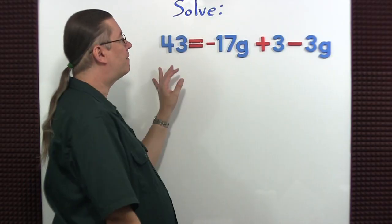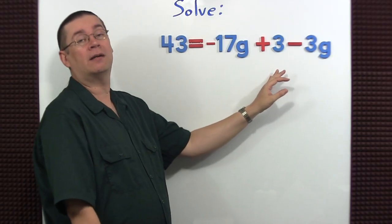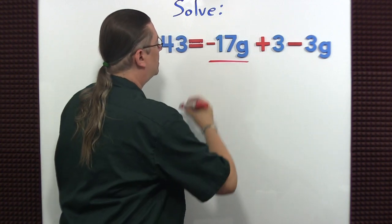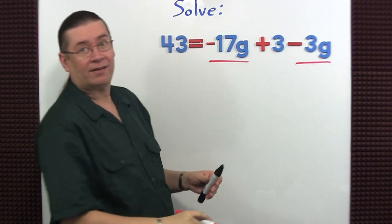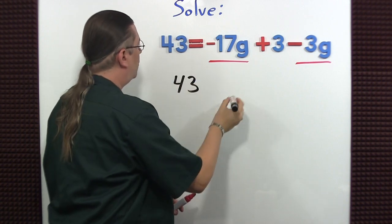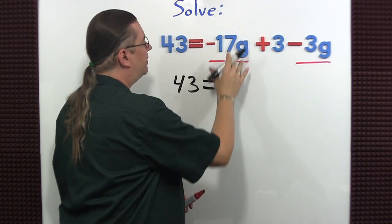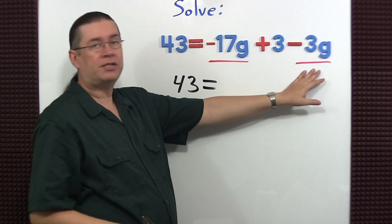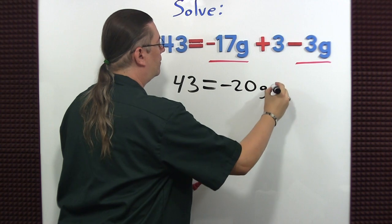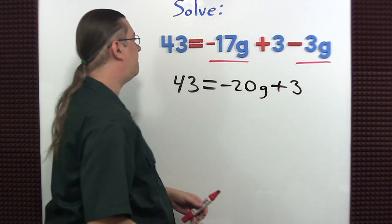Let's go ahead and solve this equation by once again combining like terms. Here's one. There's the other. 43 is equal to negative 17g minus 3g is negative 20g plus 3.